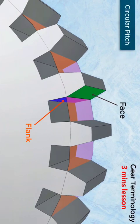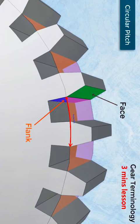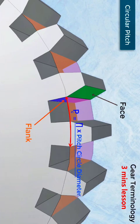Circular pitch. The distance between a point on a tooth to the same point on an adjacent tooth, measured along the circumference of the pitch circle, is known as the circular pitch. Circular pitch is denoted by P suffix C and given by: PC = π × pitch circle diameter / number of teeth.